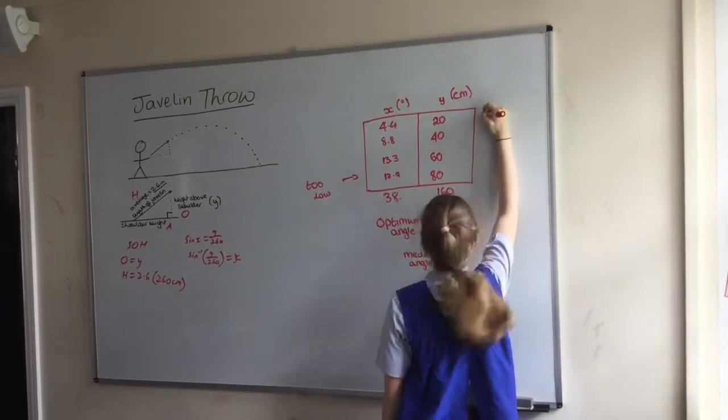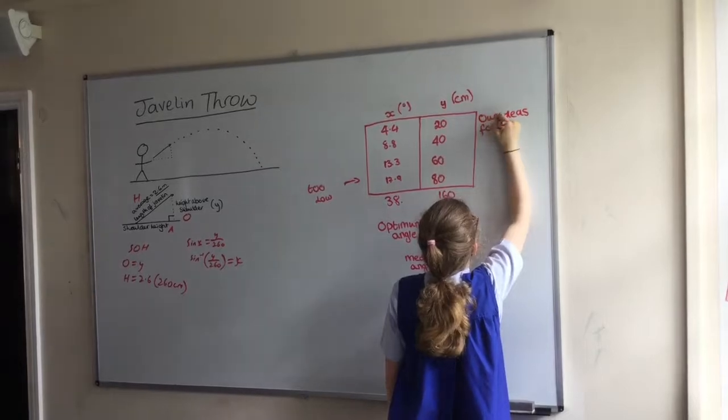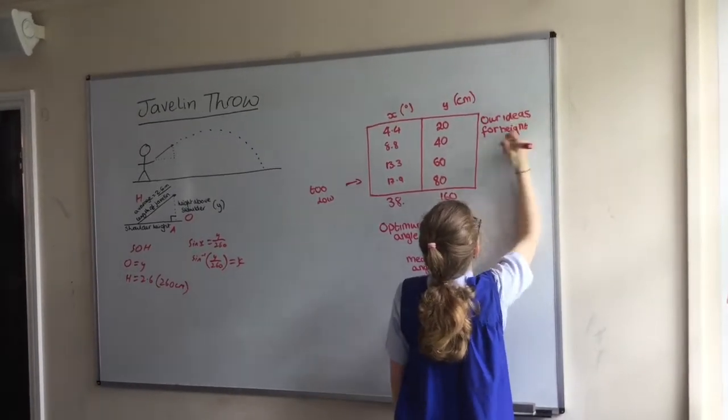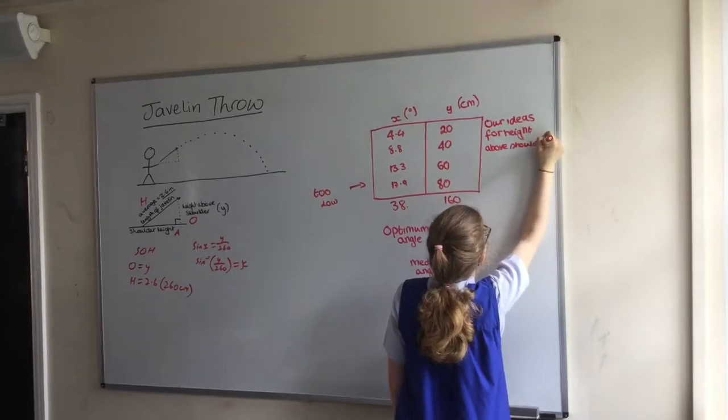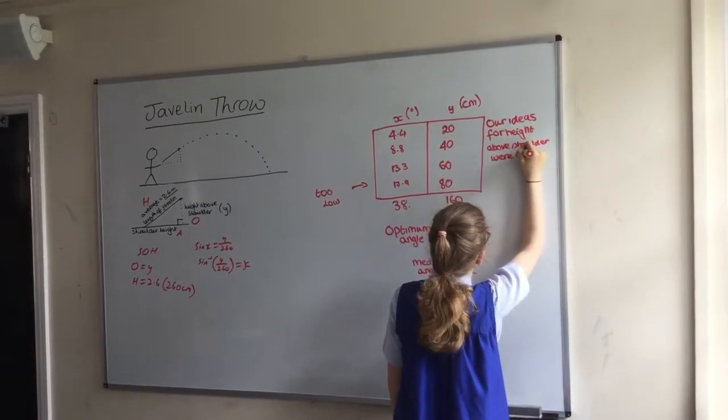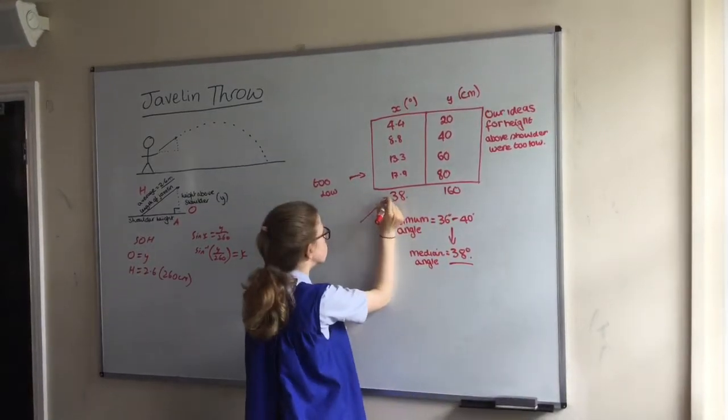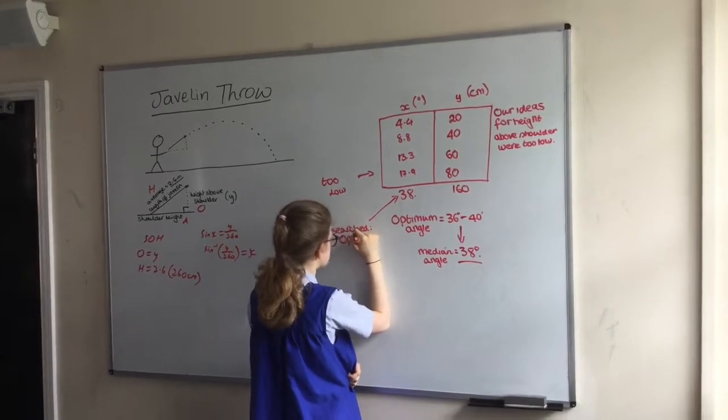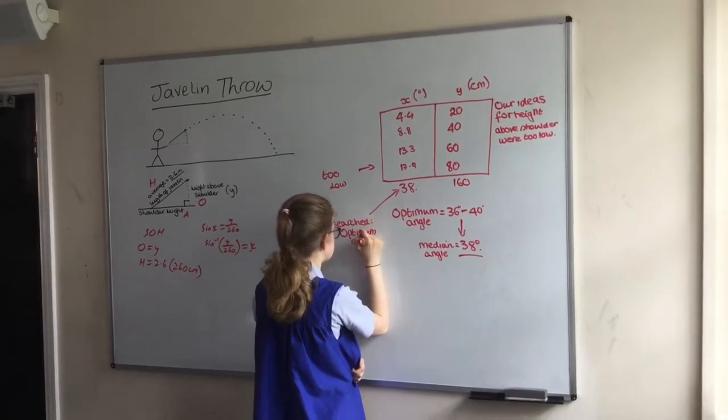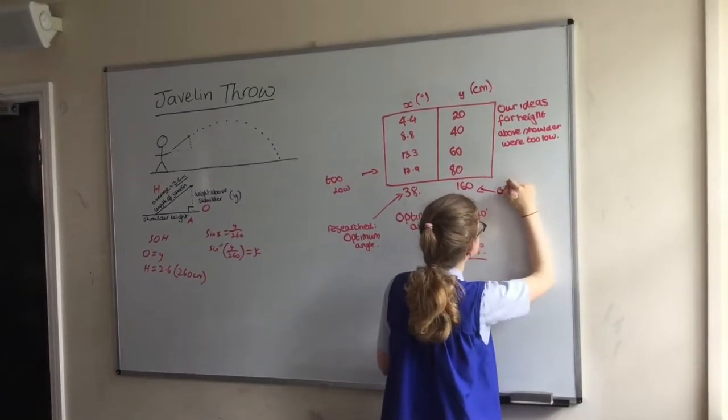Therefore, this gave us the optimum height above the shoulder of 1.6 metres. Our original estimations were far too low.